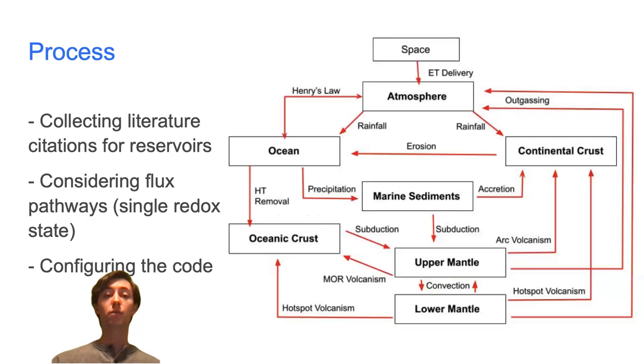The geological evolution of sulfur was simulated using a box model of the major sulfur reservoirs. Over the summer, we spent the first few weeks obtaining literature citations for sulfur reservoirs. Next, we discussed how to adapt the previously used code for other elements, including nitrogen and phosphorus. And the majority of the summer was spent configuring the new code for the different flux pathways and running simulations.